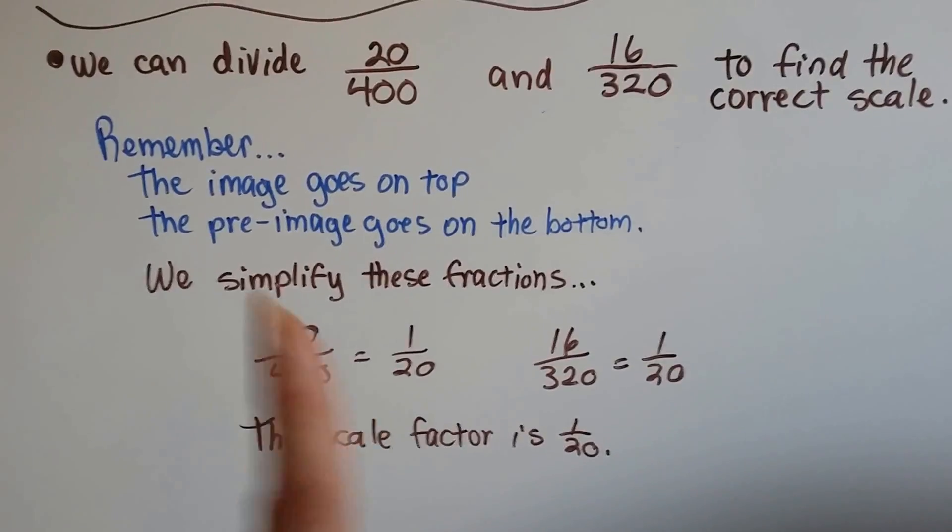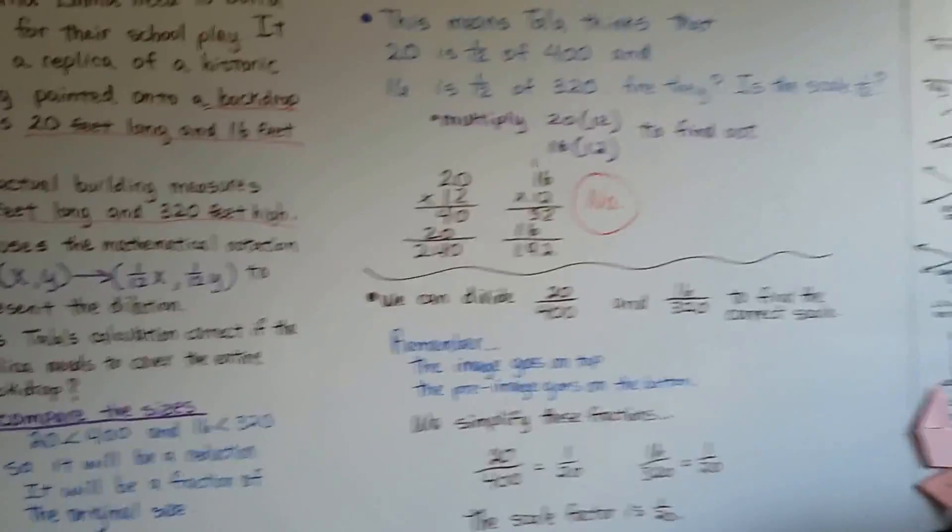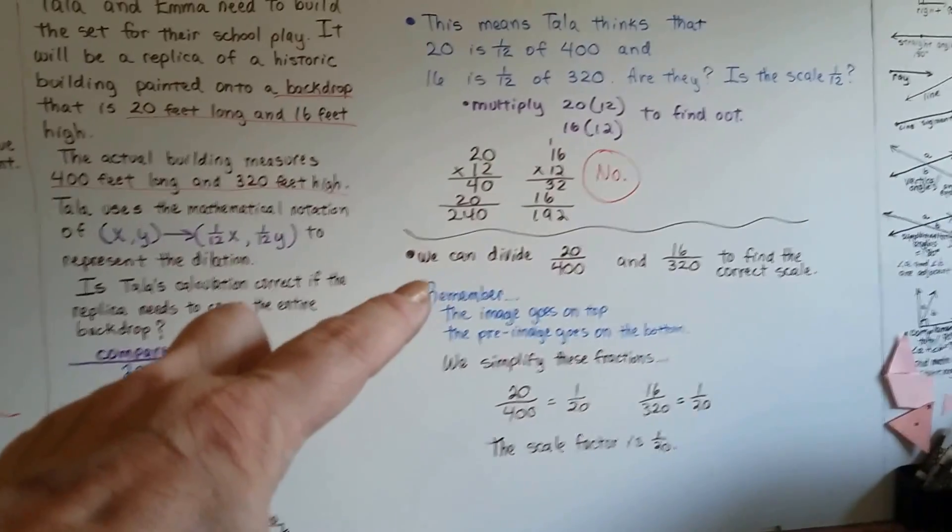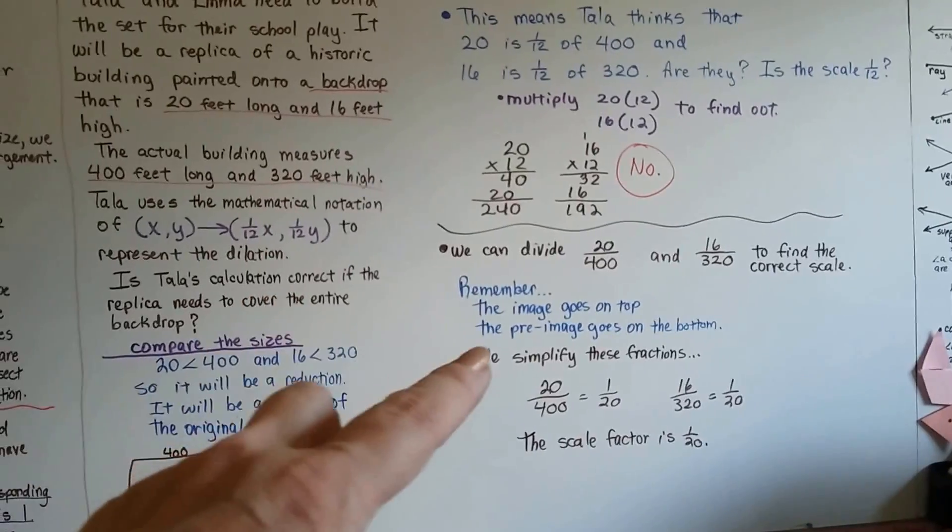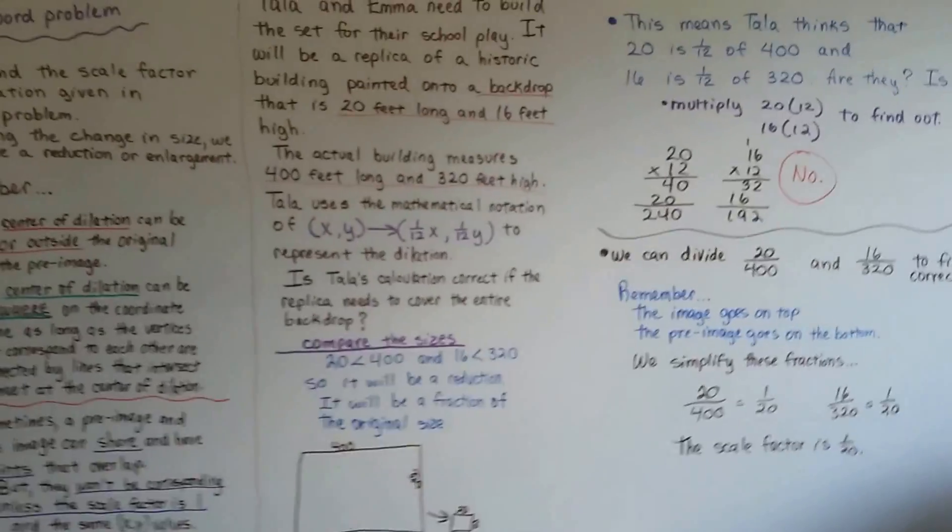We know the scale factor is 1/20th, not 1/12th. It wasn't that hard, was it? All you have to remember is that the image, the new image, goes as the numerator and the pre-image, the original one, goes as the denominator and you'll be able to figure out the ratio.